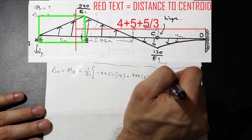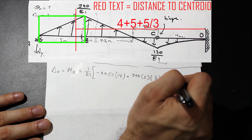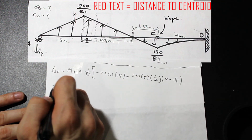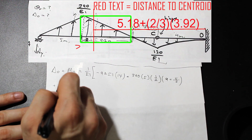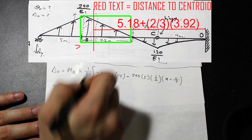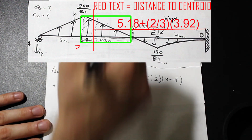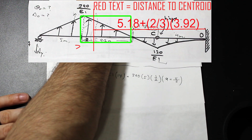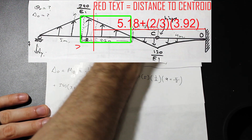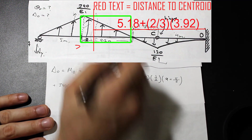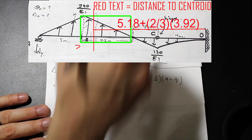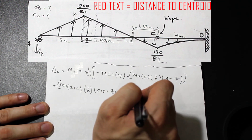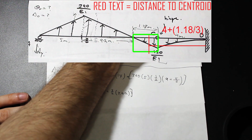The centroid distance for that triangle is 4 plus 5 plus five-thirds, which is 9 plus five-thirds. For the next triangle — height 390, base 3.92, times one-half — multiplied by 5.18 plus two-thirds of 3.92.